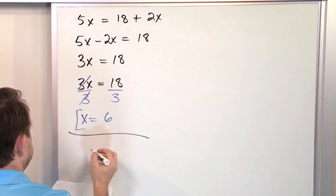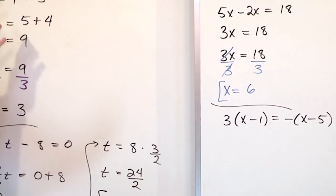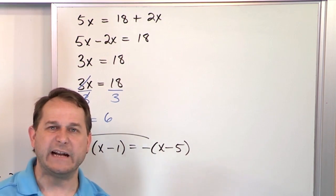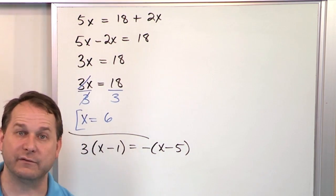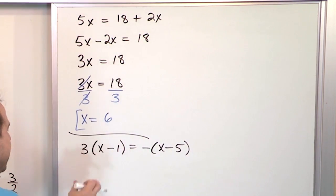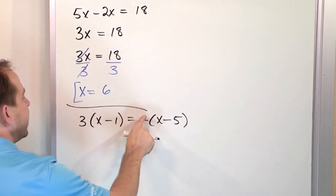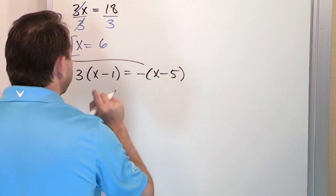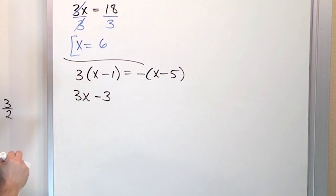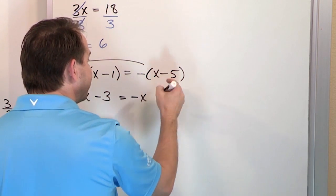Next we have 3 times (x minus 1) equals negative (x minus 5). The problems are getting more complex — we now have parentheses and x's in different locations. We distribute the 3 on the left: 3 times x is 3x, and 3 times negative 1 is negative 3. On the right, the invisible negative 1 times x gives negative x, and negative 1 times negative 5 gives positive 5.